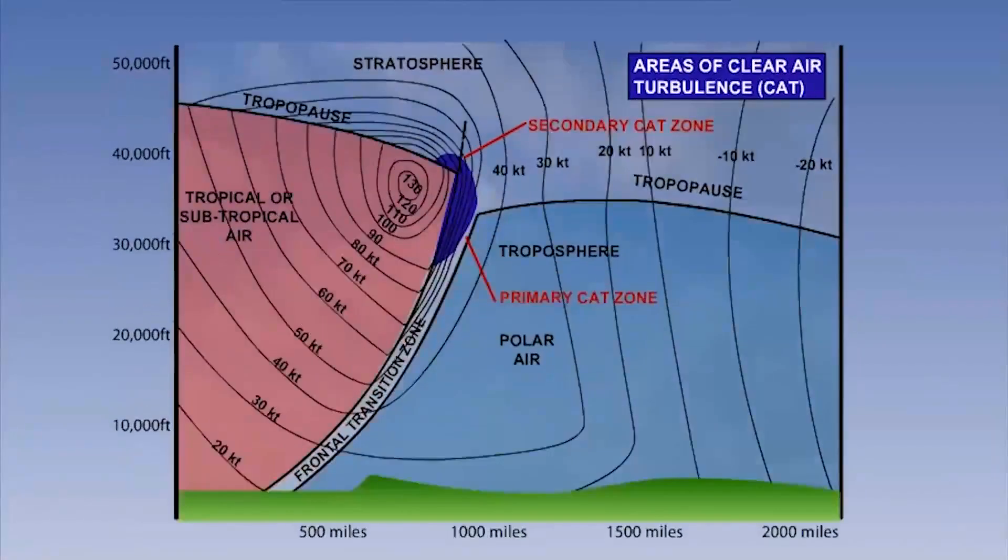On the diagram, we can see a cross-section of a typical jet stream. Notice the jet itself is located within the warm air and the clear air turbulence is located to the side of the jet that faces the cooler of the air masses. The black lines are isotacks, which are lines joining places of equal wind speed.